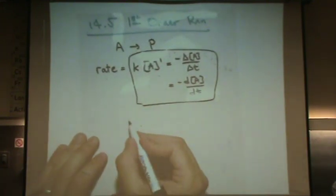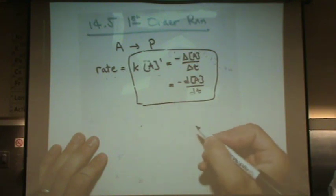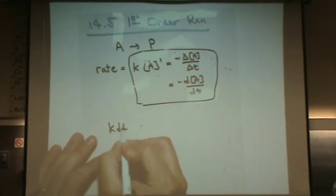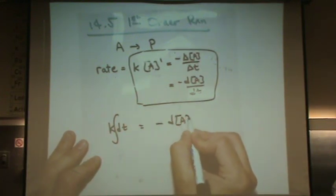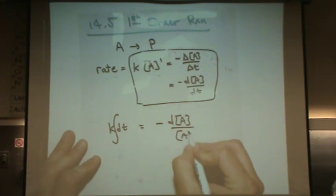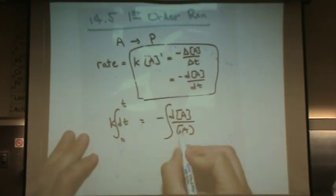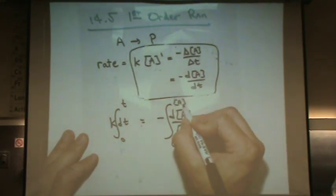Okay, let me rearrange this a little bit. So we've got, I guess I'll put k dt here. Integrate that. And minus d[A] over [A] here. Integrate that from zero to time t. And from initial concentration [A]₀ to the concentration at time t.